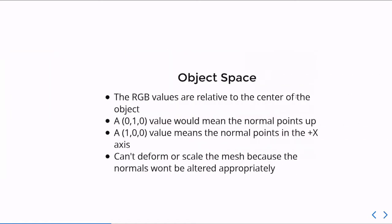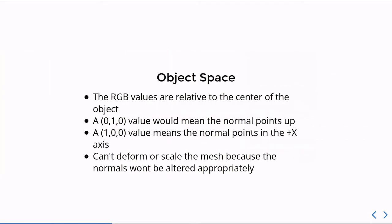Object space has the RGB values representing global directions. So, the value of green would be the Y coordinate and that would be directly up. The value of red might be, will be the X coordinate pointing directly to the X axis and Z being in the Z. I should make sure my hands are in frame.